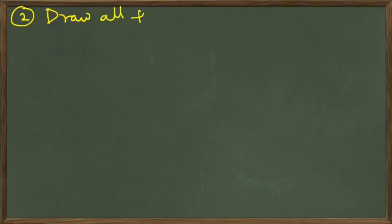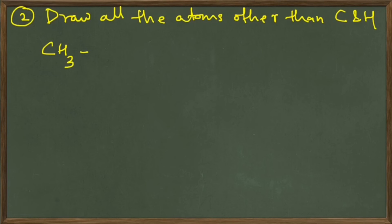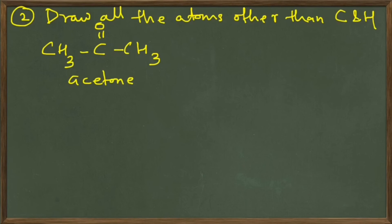Now let's move on to rule number two. The second rule is: you draw all atoms other than carbon and hydrogen — other than C and H. For example, if your compound contains an oxygen atom, a nitrogen atom, or chlorine, you have to draw those. Let's take an example. We have CH3 C double bond O CH3, which is known as acetone. We will learn about this more as we progress through the lectures. To convert it to its bond line formula, we begin as we did for the alkanes and count the carbon atoms in the chain — we have three.